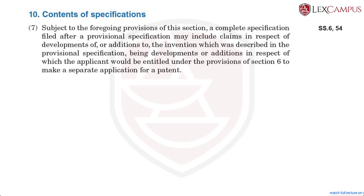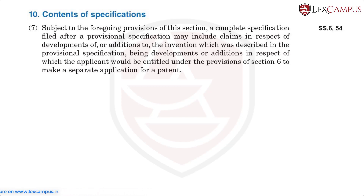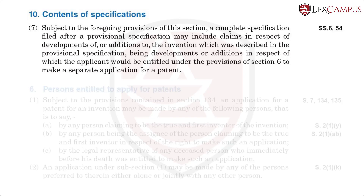Subsection 7 states that, subject to the foregoing provisions of this section, a complete specification filed after the provisional specification may include claims in respect of developments or additions to the invention which was described in the provisional specification — being developments or additions in respect of which the applicant would be entitled, under the provisions of Section 6, to make a separate application for a patent.